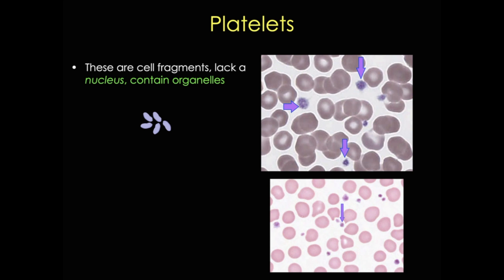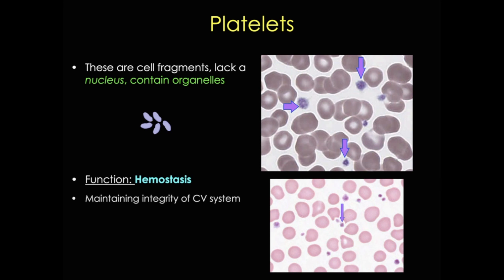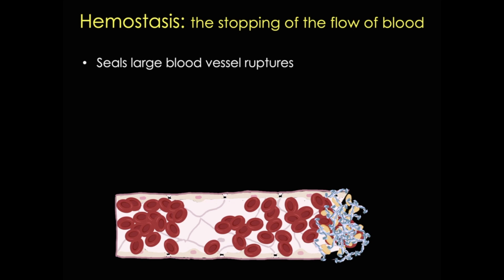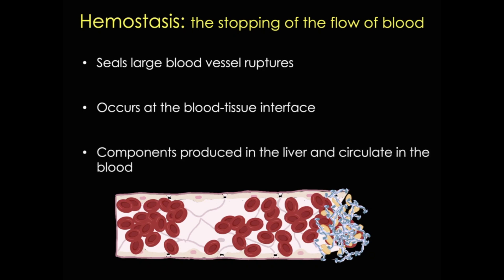Platelets lack nuclei, but they do have organelles. They originate from the ends of cytoplasmic processes of megakaryocytes, which I described in my hematopoiesis video. Platelets function in hemostasis, which really just means the stopping of the flow of blood. This function is critical to maintaining the integrity of our closed cardiovascular system. This process essentially seals large blood vessel ruptures and occurs at the blood-tissue surface. Many of the components critical to hemostasis are produced in the liver and circulate in the blood, and some are released from platelets.